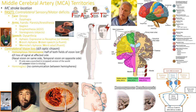So the MCA stroke. It used to be called just the FAST score, and it got upgraded to BFAST to include posterior strokes. FAST used to be the standard for about 15 years — FAST meaning face, arms, and speech.